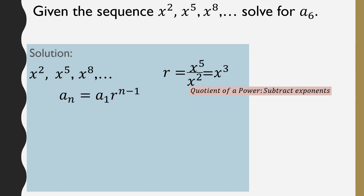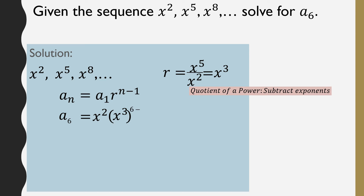Next, use the formula a sub n equals a sub 1 times R raised to the power of n minus 1. Since we're solving for a sub 6, n is 6. So a sub 6 equals x squared times x cubed raised to the power of 6 minus 1. Simplify: subtract the exponent first, 6 minus 1 is 5.